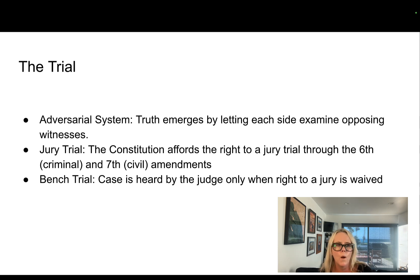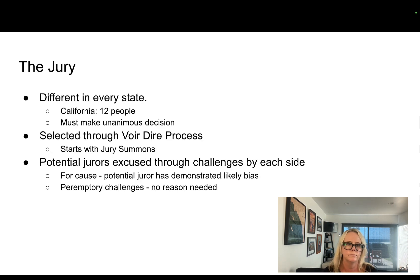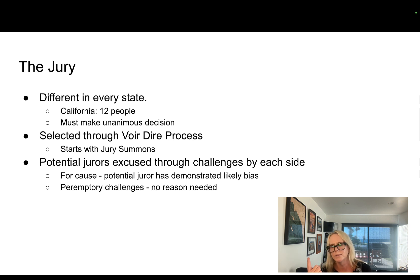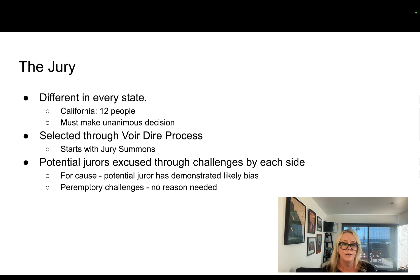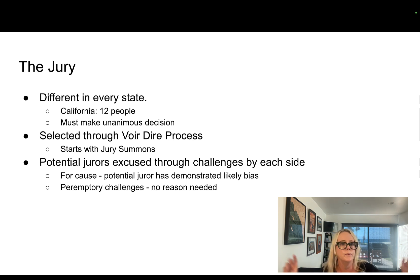Bench trials are also used when you have a defendant that a jury might not find very likable. Juries are different in every state. In California, we have 12 people on our juries, and they have to make a unanimous decision. If one person disagrees with the other 11, you do not have a unanimous decision and you have what's called a mistrial — meaning the case is over. You either have to start again with a new jury or decide it's not worth it. Juries are selected through what's called the voir dire process, which starts with a jury summons in the mail.